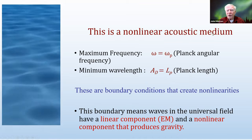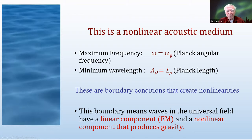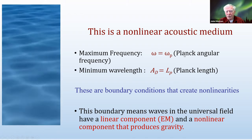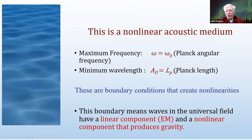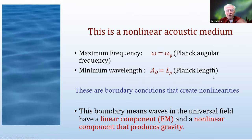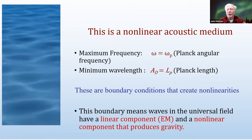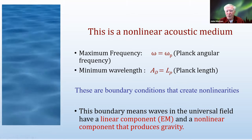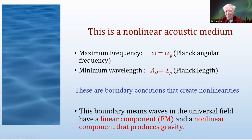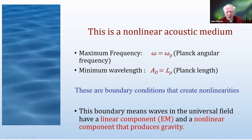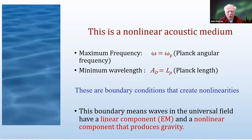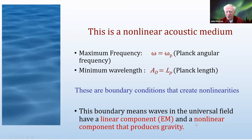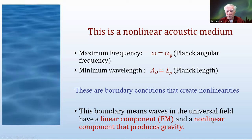This is a non-linear acoustic medium. The maximum frequency is Planck angular frequency, and the minimum wavelength is Planck length — these are absolute boundaries. Without these limits there'd be no non-linearity. Once these boundaries are imposed, non-linearities emerge: waves in the universal field have a linear component ultimately responsible for electromagnetic properties, and a non-linear component that produces gravity.